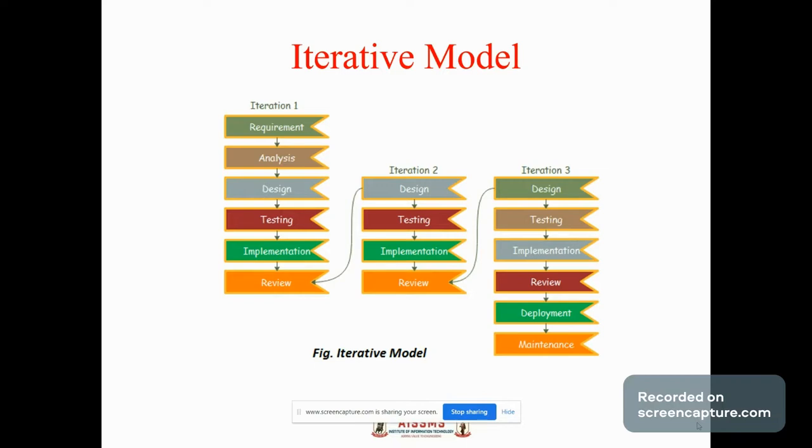Here are the various phases of iterative model. Requirement gathering and analysis. In this phase, requirements are gathered from the customers and checked by an analyst whether requirements will fulfill or not. Analyst checks that need will achieve within budget or not. After all of these, the software team skips to the next phase.